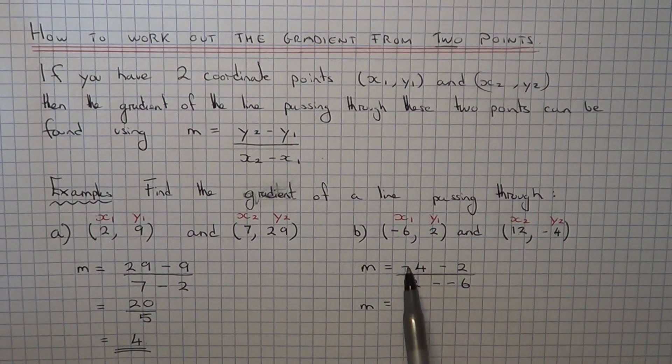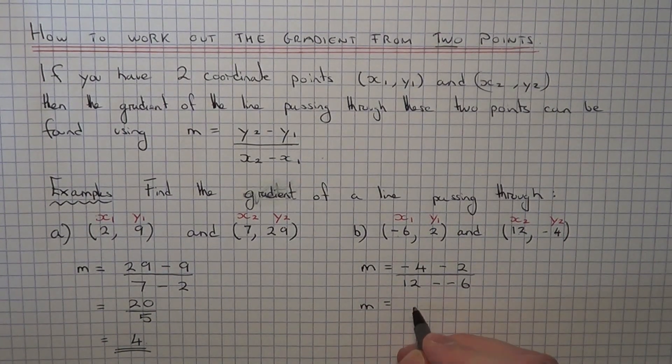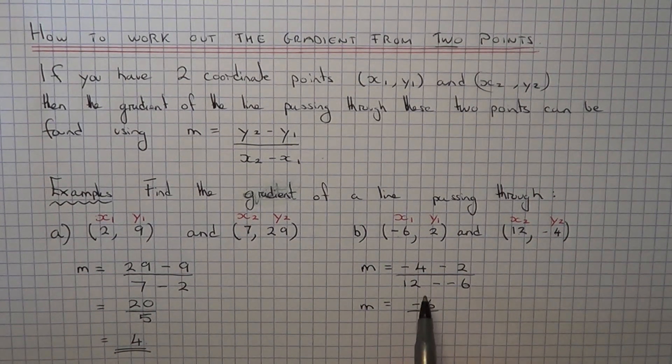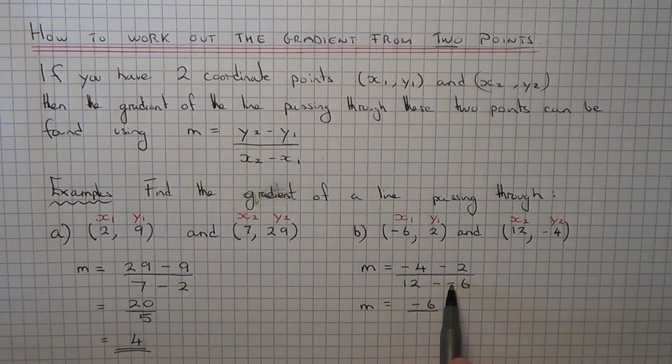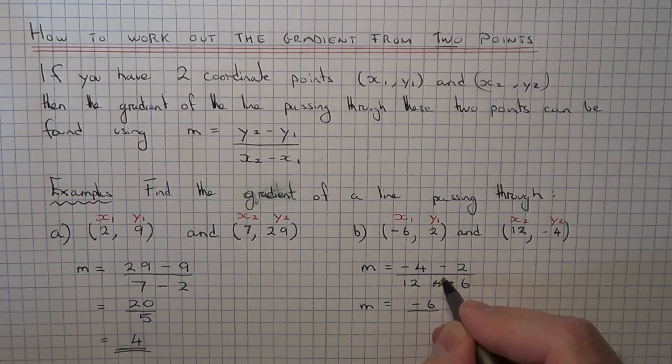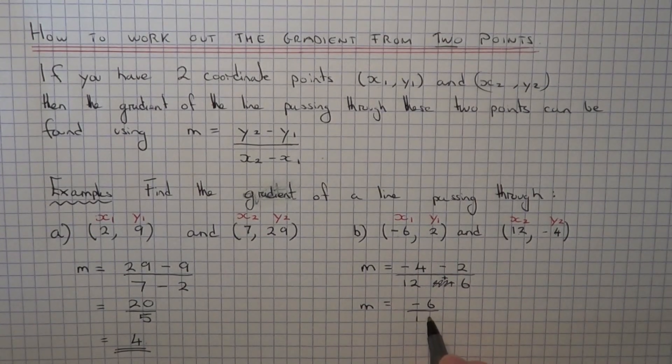So if we work out the top bit, minus 4 take away 2 gives minus 6. And on the bottom we have 12 take away minus 6. So this will be the same as doing 12 add 6, which is 18.